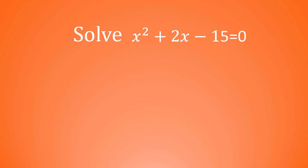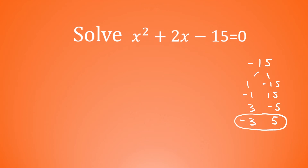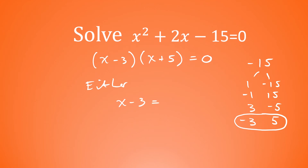We've got another one that involves a negative — negative 15 as the constant on the end. We want the factors of negative 15: it could be 1 and negative 15, or negative 1 and positive 15, or 3 and negative 5, or negative 3 and positive 5. One of these pairs will add together to make 2, and that is negative 3 add 5, which is 2. So it factorizes to x minus 3 and x add 5 equal to 0. Either x minus 3 is equal to 0 and x equals 3, or x add 5 is equal to 0 and x equals negative 5.